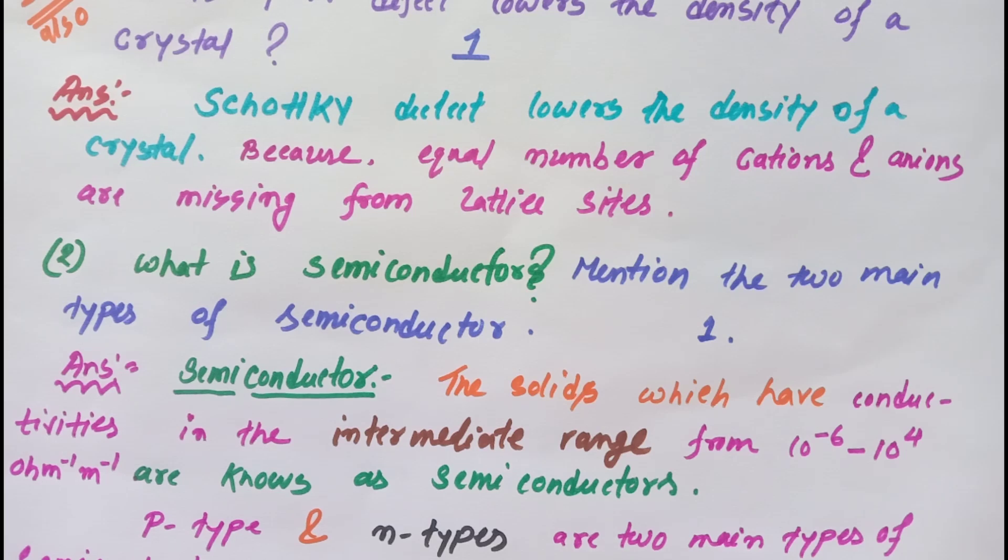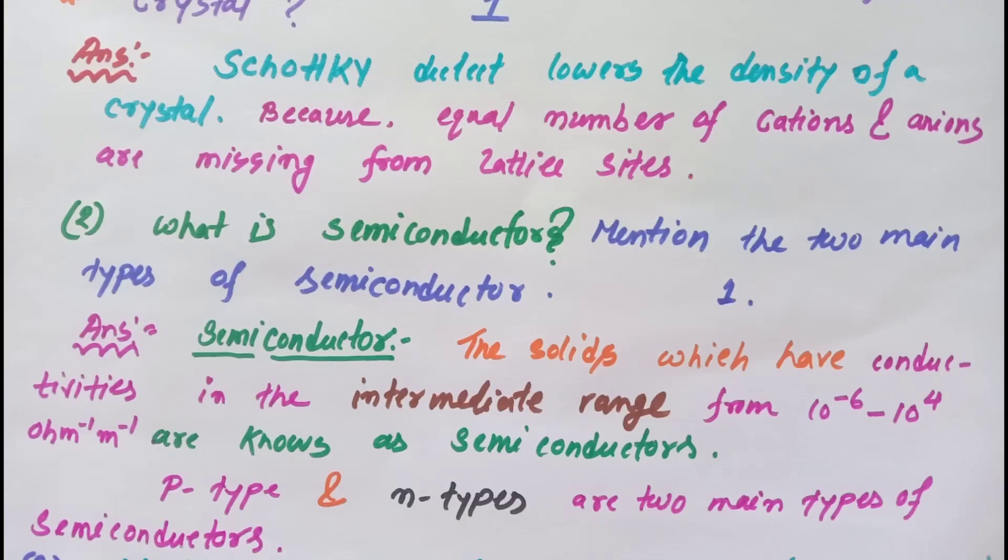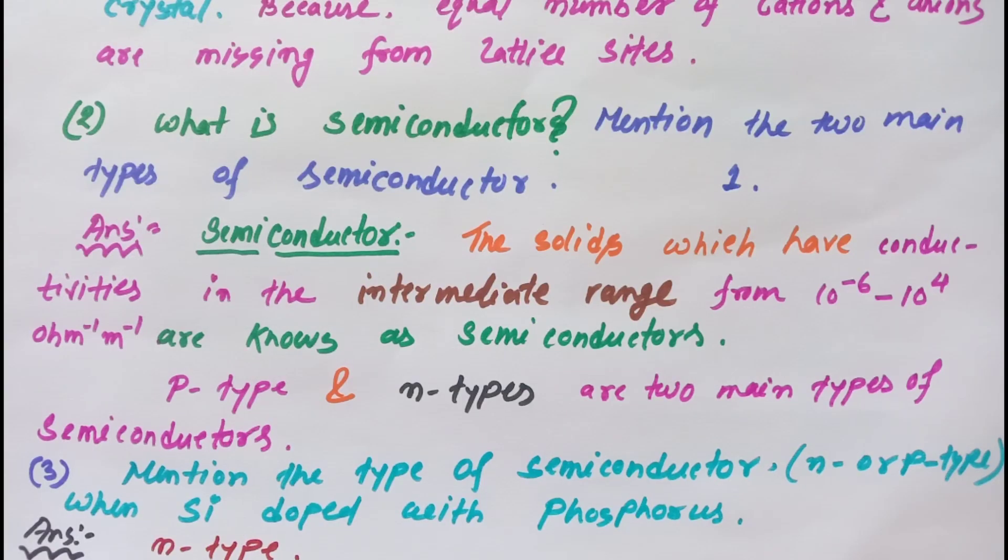P-type and N-type are two main types of semiconductor. Next question: Mention the type of semiconductor (N or P type) when silicon is doped with phosphorus. The answer will be N-type.